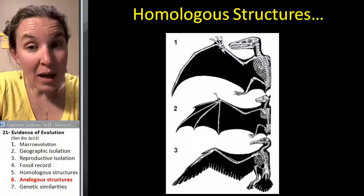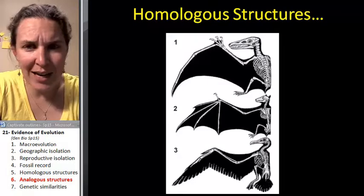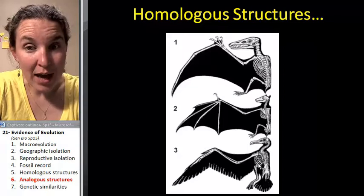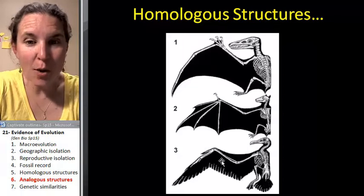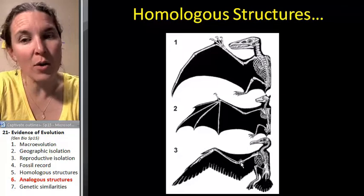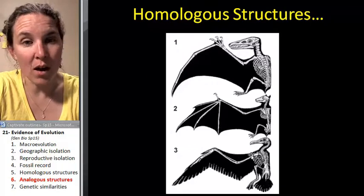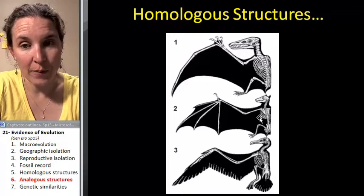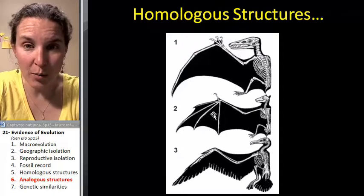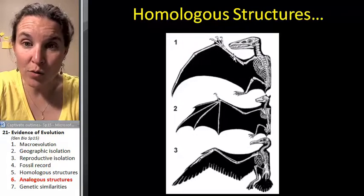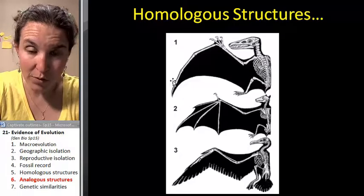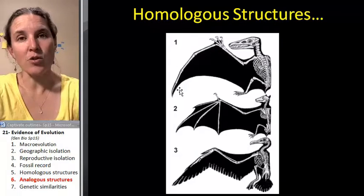The homologous structure here — this is a dinosaur, this is a bat, and this is a bird. Look at their bones. They've got their long fingers, their two forearm bones, and their one arm bone. One arm bone, two forearm bones, finger bones. Those are homologous structures.